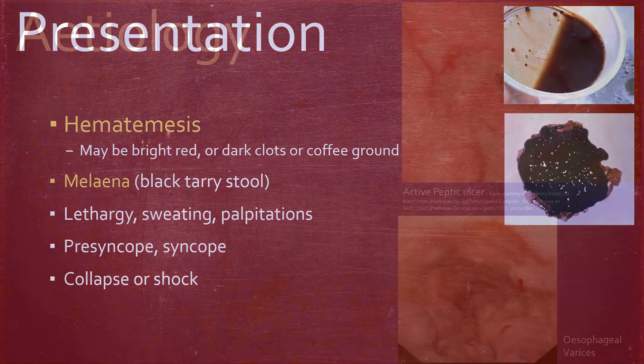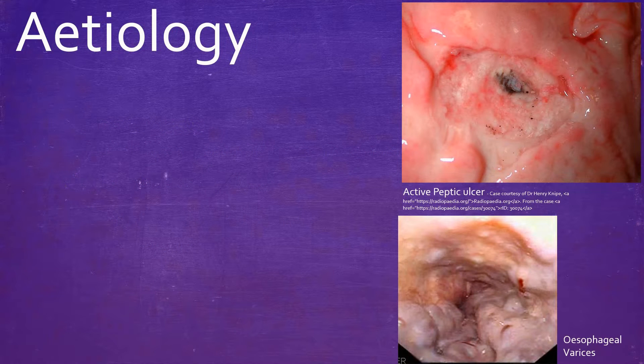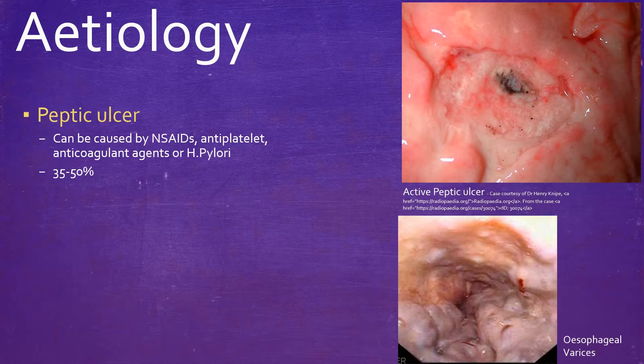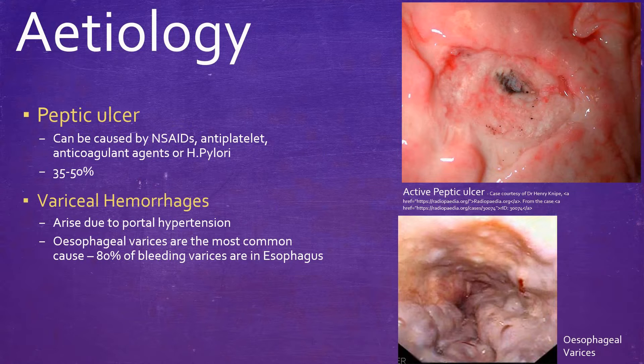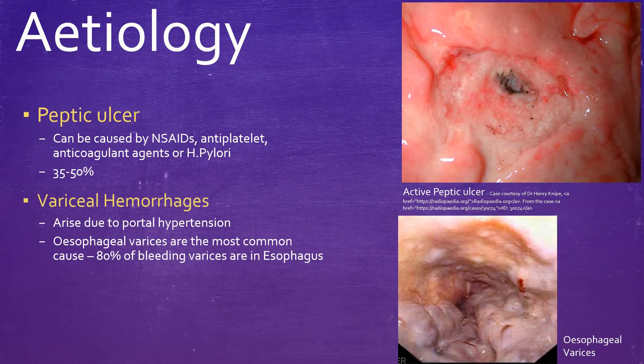The most common causes for an acute upper GI bleed are peptic ulcers or variceal hemorrhages. Peptic ulcers can be caused by NSAIDs, antiplatelet agents, or H. pylori, and variceal hemorrhages arise due to increases in portal pressures, of which esophageal varices are the most common.